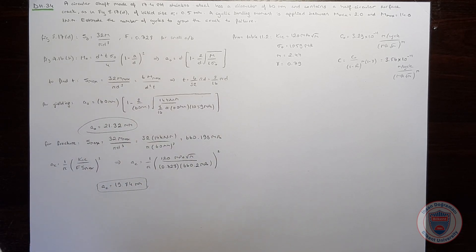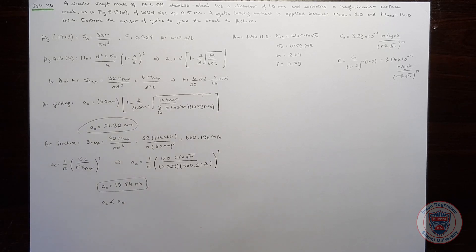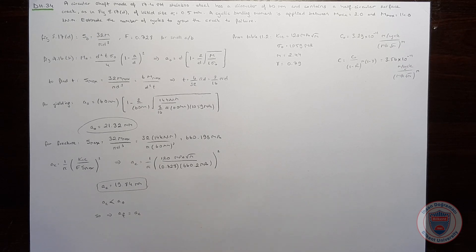When we compare the crack lengths for yielding and fracture, we see that the crack length for fracture is smaller than the yield crack length. So, we will use the critical crack length as the final crack length.